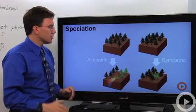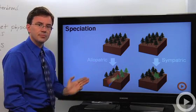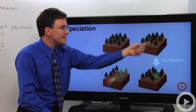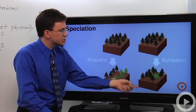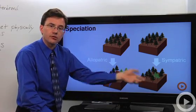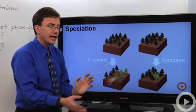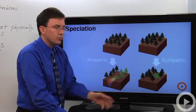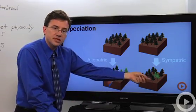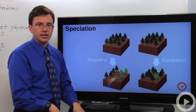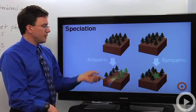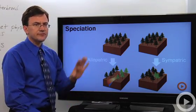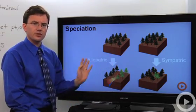Now that's contrasted with sympatric speciation where in the same physical location as the parental population a few mutants appear or a few differences appear and rather than being shared with a larger gene pool you start off winding up with a new species within that same physical location. Now allopatric speciation can happen with all sorts of creatures. Sympatric speciation is far more common with plants than with animals.